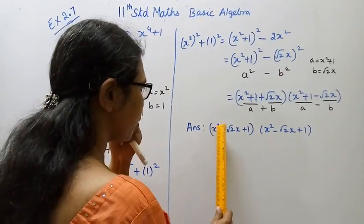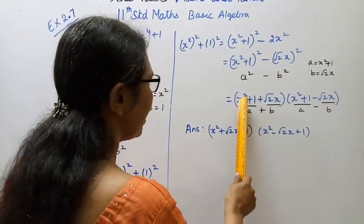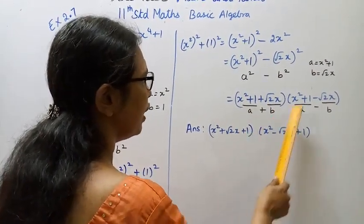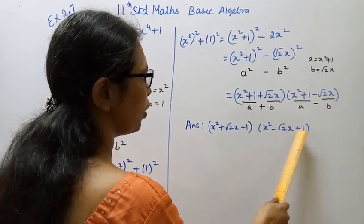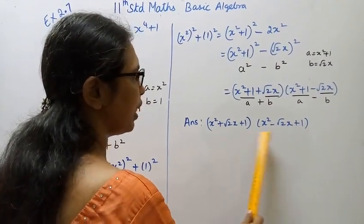Writing in standard order with x² first, then x term, then constant: the final answer is (x² + √2x + 1)(x² - √2x + 1).